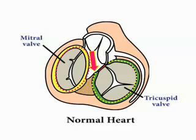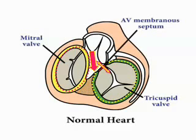there is an area where the membranous septum separates the subaortic outflow tract from the right atrium, giving us a true atrioventricular septal region, and then a second area shown by the blue star in which the atrial myocardium overlaps the crest of the ventricular mass.